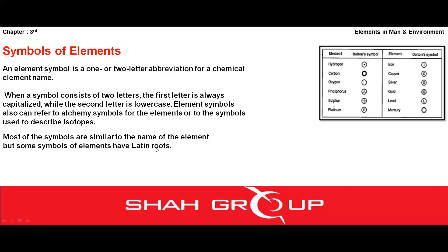Yahan ek important baat yeh hai ki zyada tar elements ke symbols unke naam se hi liye gaye hain. Jaise hydrogen 'H' se start hota hai to uska symbol bhi capital H hai. Sulfur 'S' se start hota hai to uska symbol capital S hai. Carbon 'C' se start hota hai to uska symbol bhi capital C hai. Lekin kuch elements ke symbols doosri language se liye gaye hain.